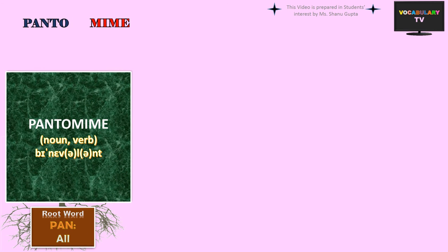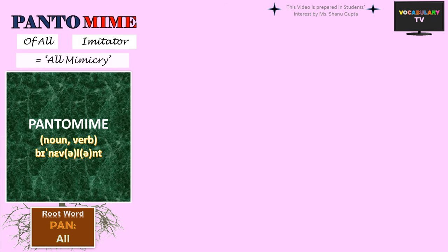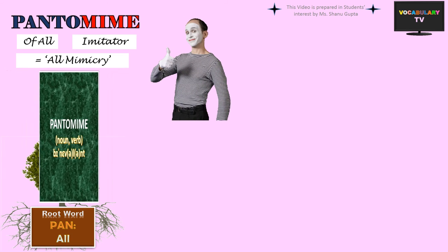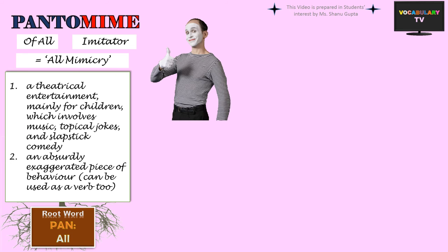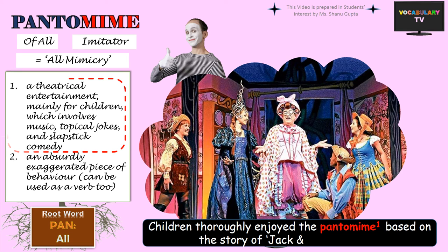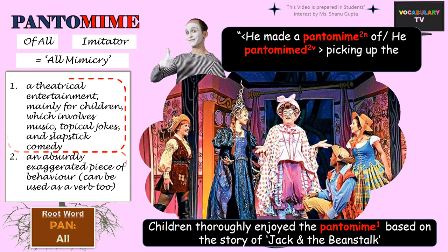Our last derived word is Pantomime, which literally means 'imitator of all.' Pantomime is characterised by all mimicry — acting out without words, using only gestures and bodily movements. The word generally refers to a theatrical entertainment mainly for children, involving music, topical jokes, and slapstick comedy based on a fairy tale or nursery story, usually produced around Christmas. For example: Children thoroughly enjoy the pantomime based on the story of Jack and the Beanstalk. Pantomime can also refer to any act of mimicry or an absurdly exaggerated piece of behaviour, used as both a noun and a verb — for example: He made a pantomime of picking up the money from the pavement, or He pantomimed picking up the money from the pavement.